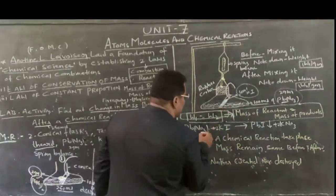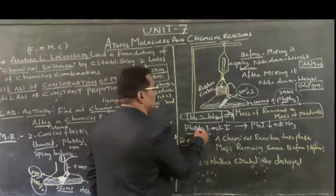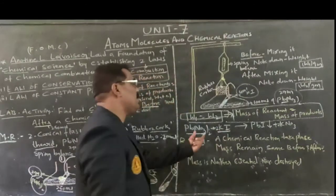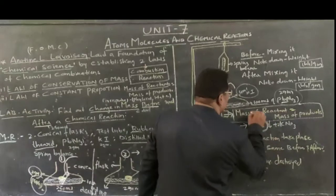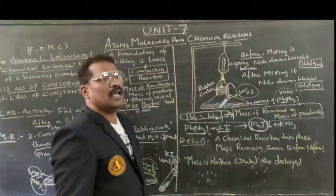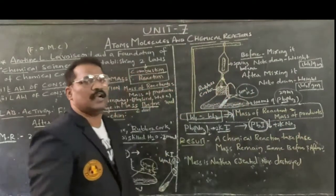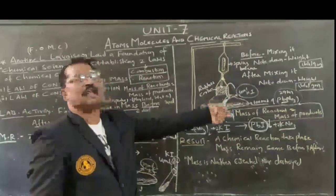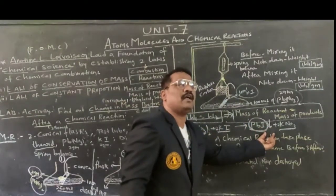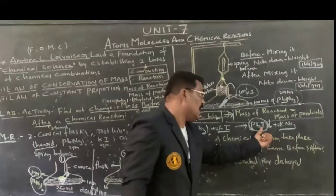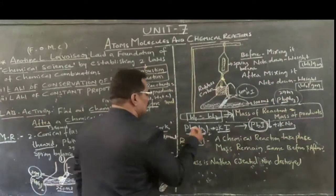So what happened here? Lead nitrate is existing within this particular conical flask, and potassium iodide reacts with it - a chemical reaction takes place. Lead iodide will be reformed, and forms a new product called lead iodide, which is a precipitate. Simultaneously, potassium nitrate solution will be formed. That is the chemical reaction taking place - combining two reactants and giving us different products: one is lead iodide as a precipitate, and simultaneously potassium nitrate solution is forming.